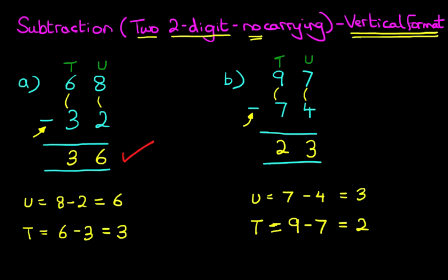So 97 minus 74 is 23. And it really is that simple. Subtraction of two two-digit numbers with no carrying using the vertical format.